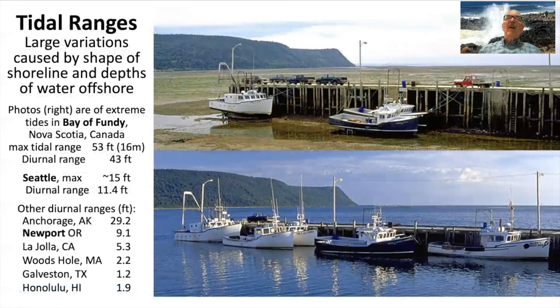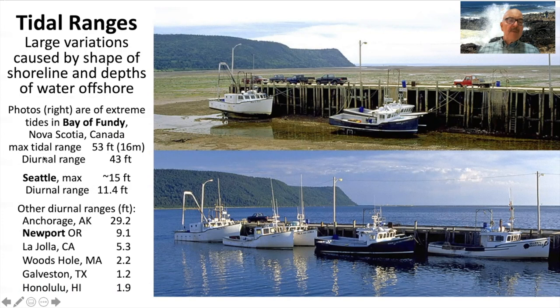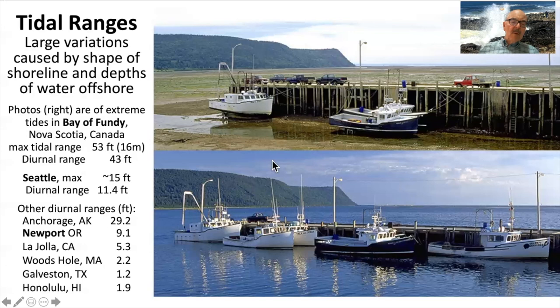The last thing we'll talk about is tidal ranges — there are variations. Think about the Bay of Fundy, which is shaped like a funnel, so the water gets forced in higher and higher, giving it extreme tides of 43 feet on average, or up to 53 feet (16 meters). In Seattle, we have about 11 feet average but 15 feet maximum tidal range. Newport on the Oregon coast is about 9 feet average. But Honolulu only has 2 feet. It just depends on the topography, the ocean basins, and how the water is funneled or channeled through various restrictions.